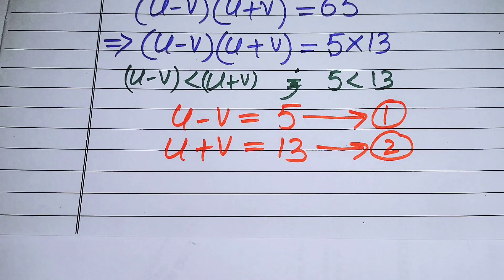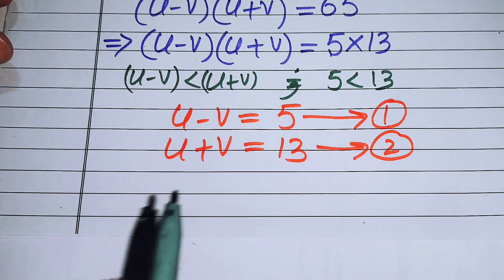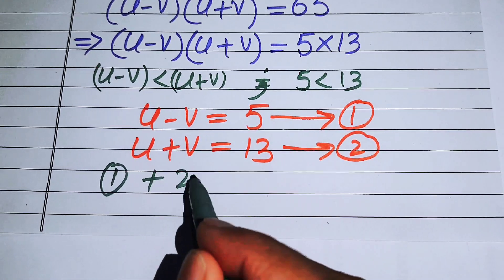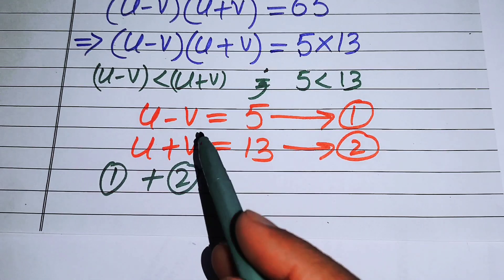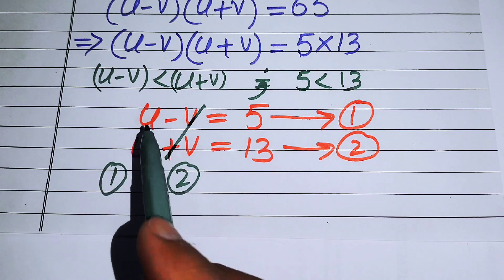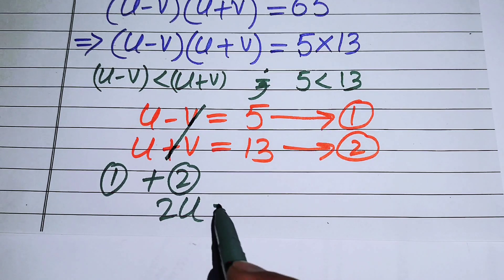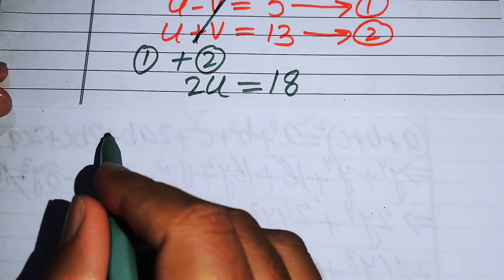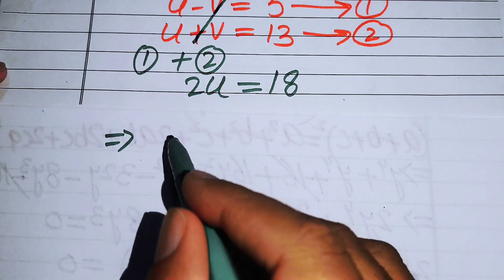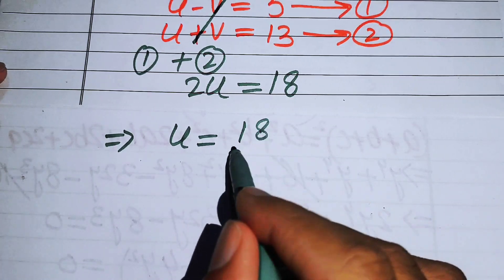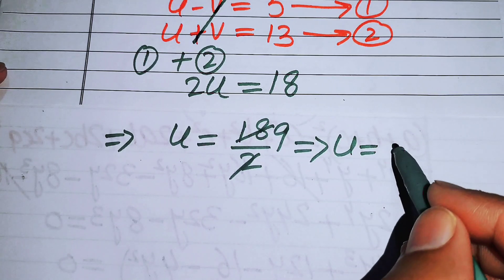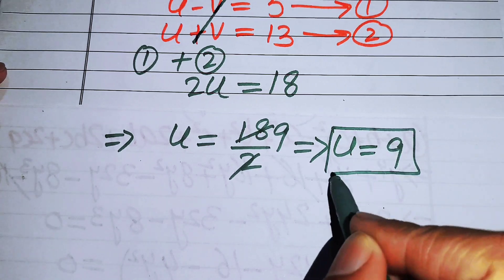Our next goal is to solve these two equations and find the values of u and v. Adding equation one and equation two, the v terms cancel, giving 2u equals 5 plus 13 equals 18. Dividing by 2, we get u equals 9.